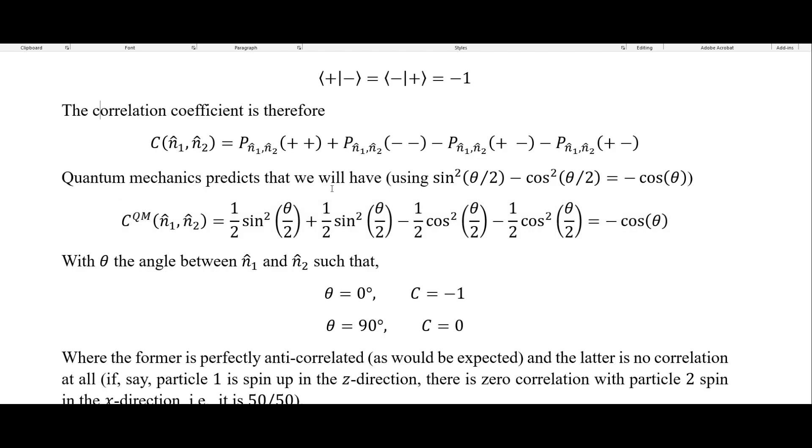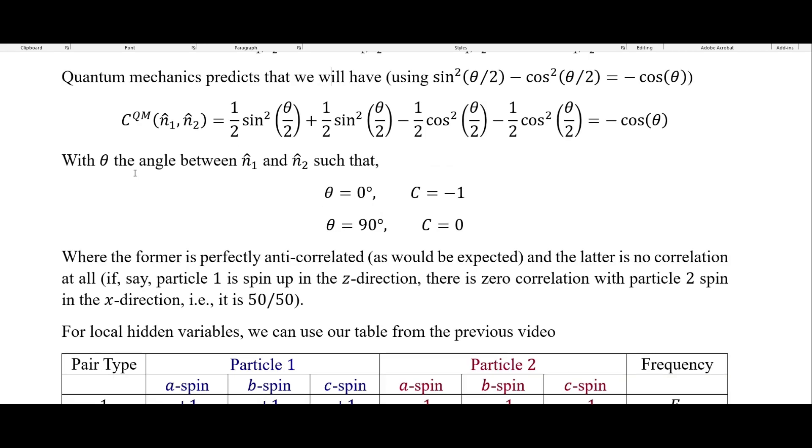Quantum mechanics predicts that we will have, and this is using this trig identity here, that our correlation coefficient here will end up just being equal to the negative cosine of the angle between them. When theta is the angle between these, such that if it's equal to zero degrees, then our correlation will be negative one. And if it's equal to 90 degrees, then it's zero.